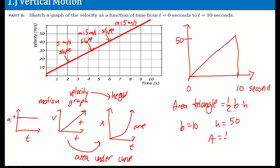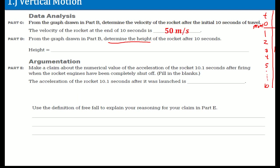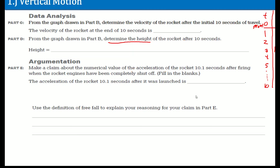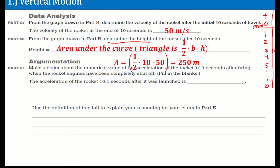So just plug it in: area equals one half times base times height. That should get you your answer — and it should be 250. The measurement is meters, because meters per second times seconds gives meters.